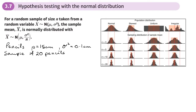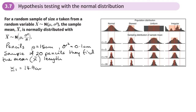From those 20 pencils, they find the mean length — we use x-bar for that. So out of the whole population of pencils the mean size should be 15, but we take a sample of 20 and find their mean length. Let's say the first sample has a mean length of 14.9 centimeters. Later on in the day they take another sample and it's dead on 15 centimeters.